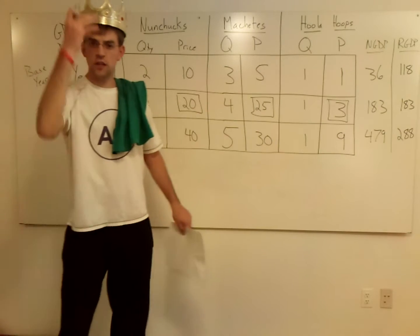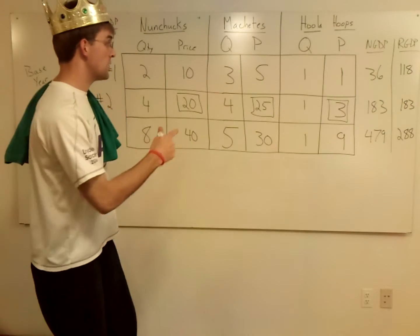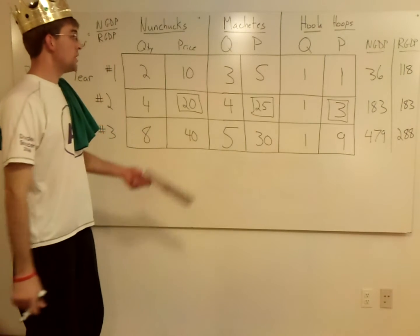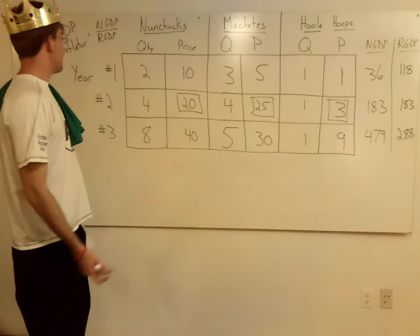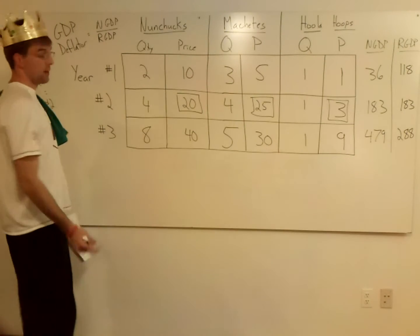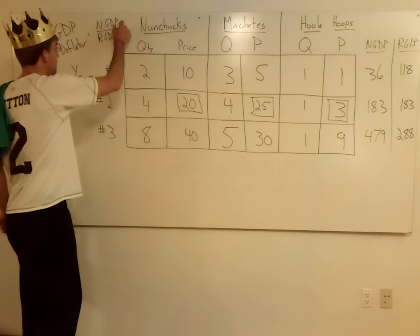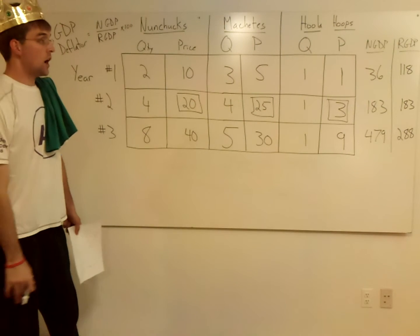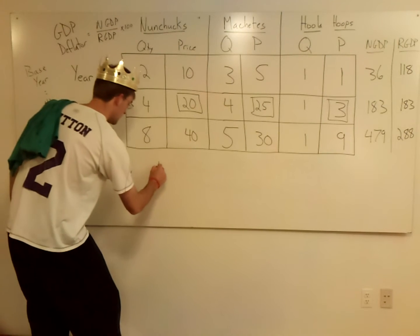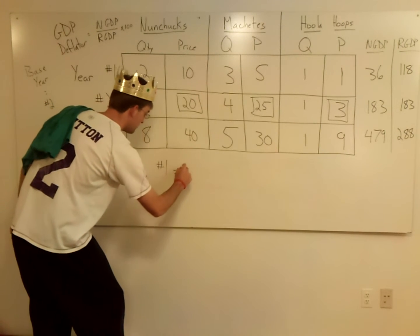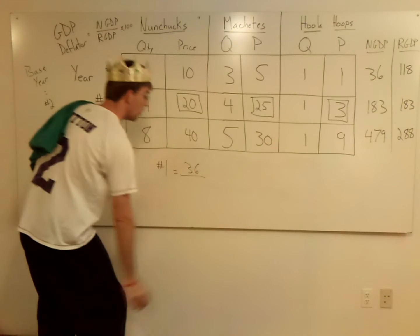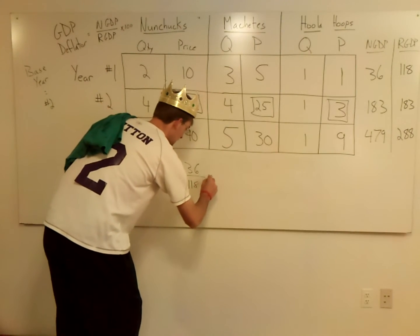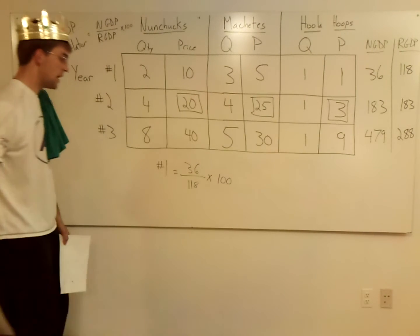So it's pretty simple once you get to this point. So nominal GDP over real GDP. So for year one, I'm forgetting something here. It should be nominal GDP times 100, or nominal over real times 100. So you just take your 36, year number one, 36 over 118 times 100. You get whatever you get.